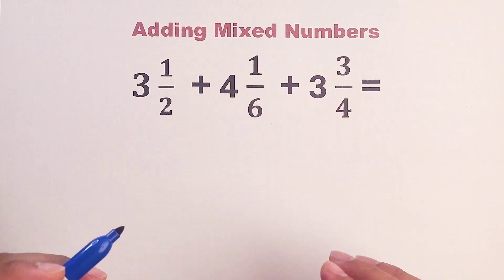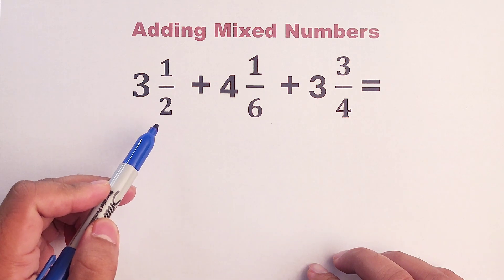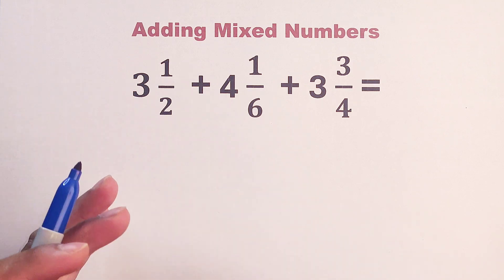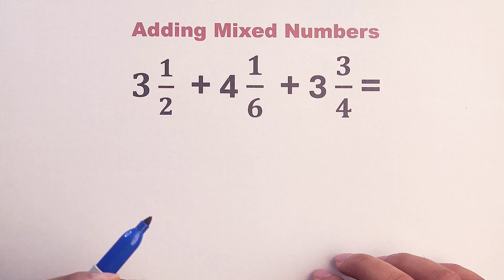So to add these three mixed numbers, three and one-half, four and one over six, three and three-fourths, we will do the same method that we have done from the previous videos.